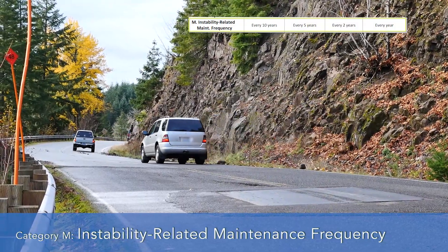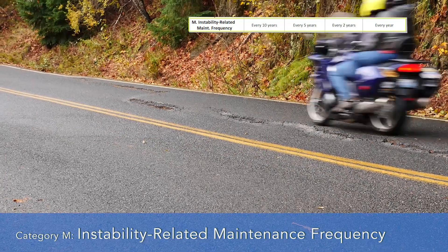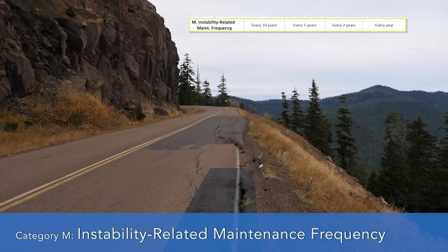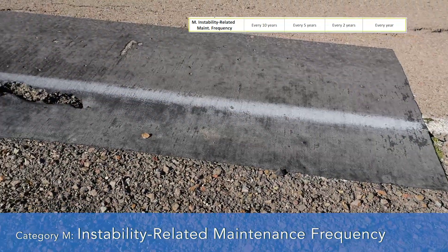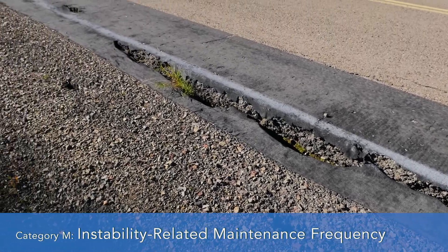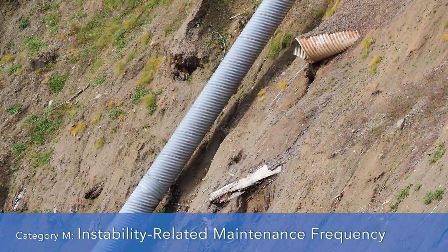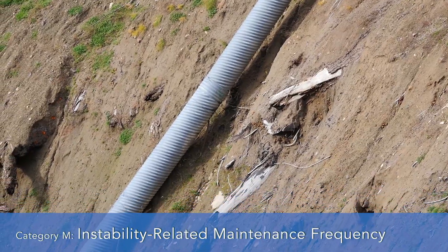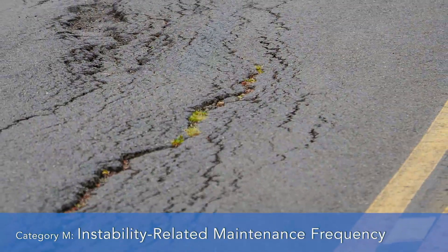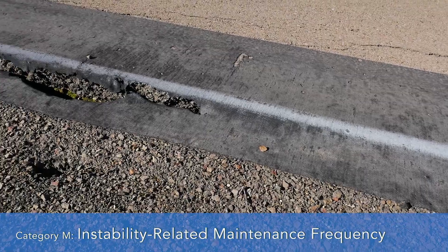Category M, instability related maintenance frequency. You should discuss this with the maintenance personnel responsible for the section or road you're working on. This is intended to capture the frequency of maintenance patching the road or putting on crack seal, and how often they do that equates to how active the slope is. Between every 10, 5, 2, or every year, you should be able to place that into score categories. Here on this site we have no patches that have been done, or other examples where it looks like something has been done about five years ago.